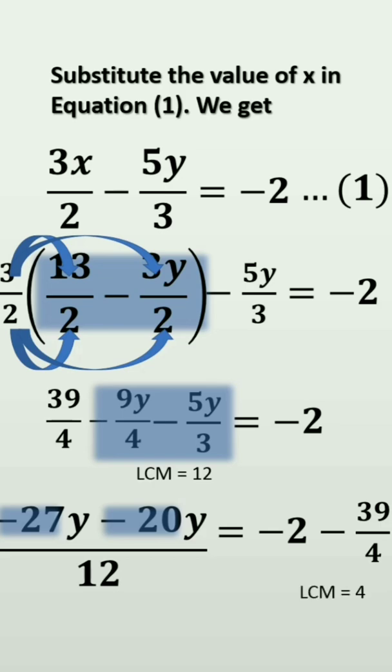Here, the LCM is 4. So, 2 times 4 is minus 8 minus 39 by 4 which is equal to LHS is minus 47 by 12.